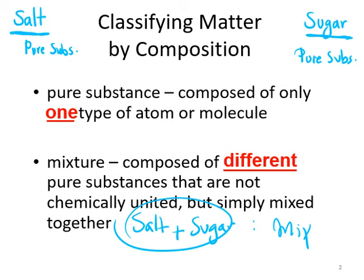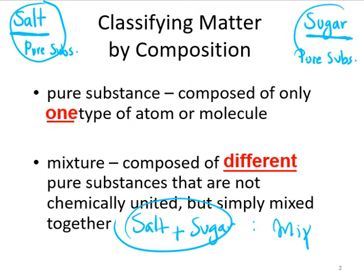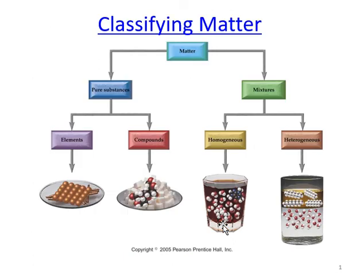It doesn't matter whether it's two, three, or more substances. You may add salt, sugar, and water — three substances — or add sand for four. As long as we don't have only one, we call that a mixture. If only one substance, we call it a pure substance. More than one pure substance combined is a mixture.